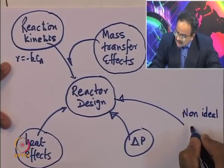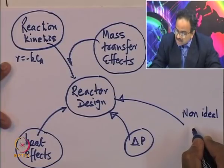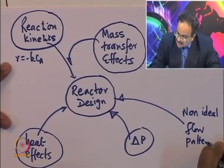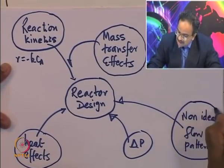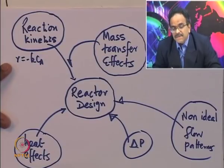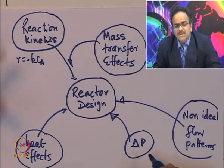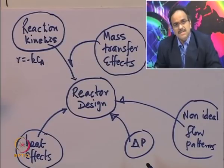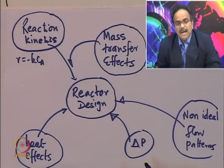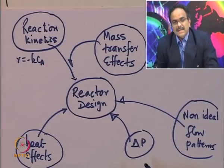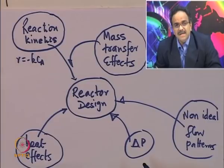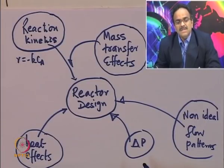Anything else? We have something called non-ideal flow patterns, which you are going to learn at a later stage in this course. Most of the reactors you have studied in part one of the reaction engineering course are ideal reactors. There is CSTR or plug flow reactor, where we assume certain flow patterns and accordingly define the concentration in the reactor. In a CSTR, concentration is uniform everywhere — it does not change with respect to spatial coordinate. In a plug flow reactor it changes from inlet to outlet, but there is no back-mixing assumed, and the concentration profile and velocity profile along the radial direction are uniform.